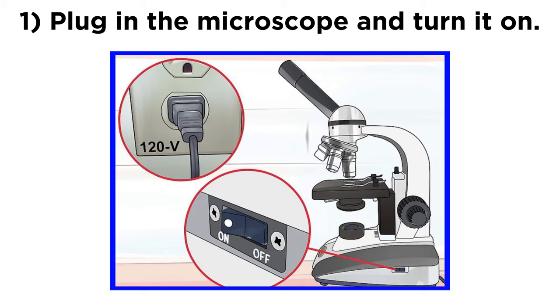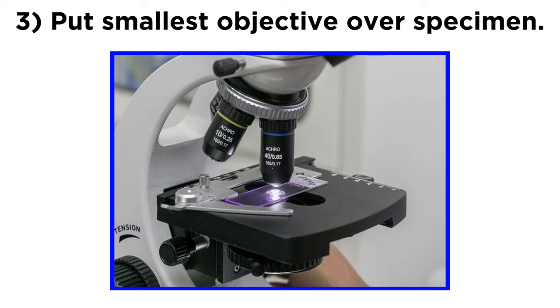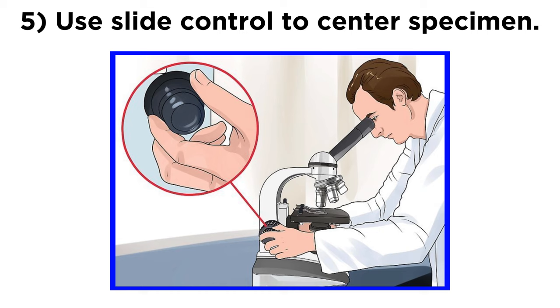To put these parts to use, one can start by plugging the light microscope in and turning on the light source. Then secure the specimen on the stage using the stage clips, before rotating the nosepiece so that the smallest objective is in place over the specimen. First use the coarse focus knob to clear up the image, then use the slide control knobs to center the specimen in your field of view.